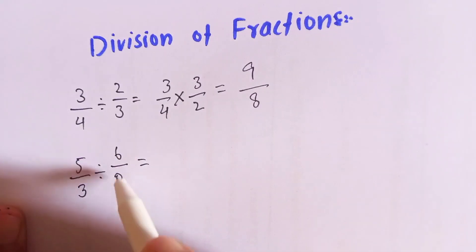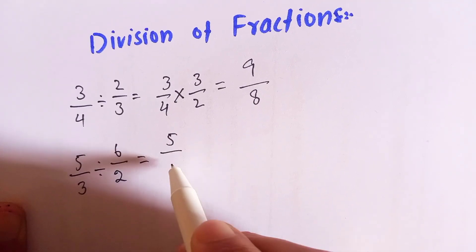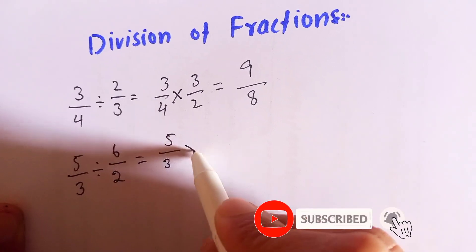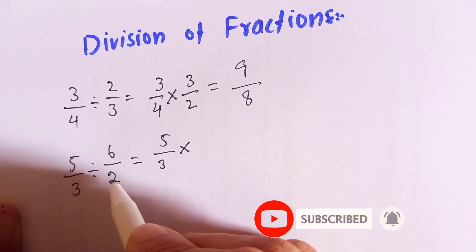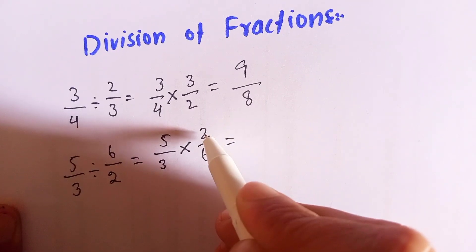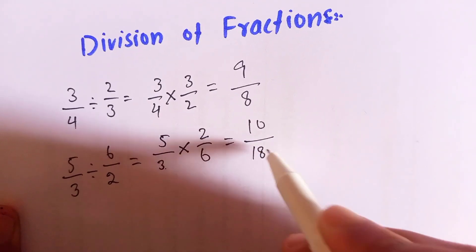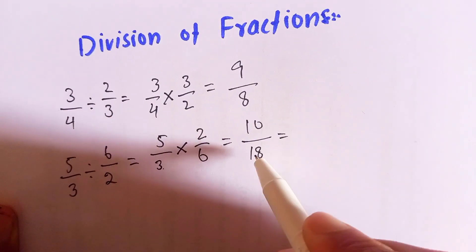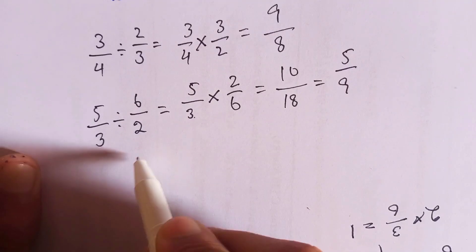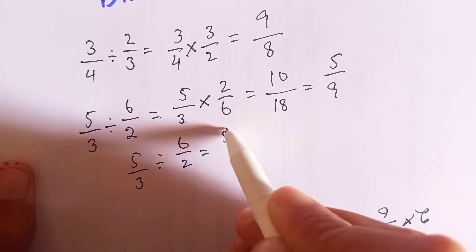Here is another example in which we have to divide 5 over 3 by 6 over 2. Again, we will write the first fraction the same, which is 5 over 3, and write the division sign as multiplication. Then invert 6 over 2 to 2 over 6. Multiply: 5 times 2 is 10, and 3 times 6 is 18. Now we can divide the numerator and denominator by 2, which gives 5 over 9. So 5 over 3 divided by 6 over 2 equals 5 over 9.